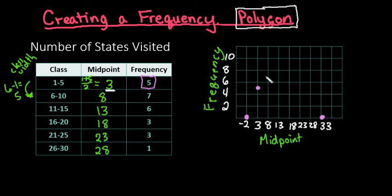For eight, the frequency is seven, so I go halfway between six and eight and put a dot. For thirteen, the frequency is six. For eighteen, it's three. For twenty-three, it's also three, and for twenty-eight, it's one.